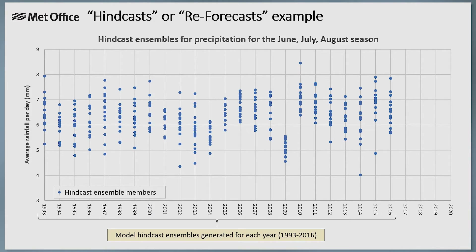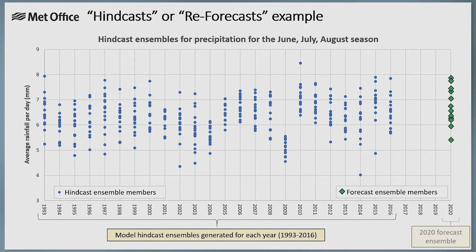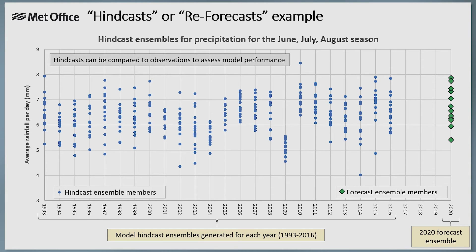To determine model climatology, we run the forecast model for a period in the past, typically 20 to 30 years. In the Met Office GloSea5 system, we cover the period 1993 to 2016. These historical forecasts are known as hindcasts or re-forecasts. Hindcast runs are produced throughout each of these past years, allowing a hindcast ensemble to be made that can match any forecast ensemble in terms of lead time and the forecast season, allowing a fair like-for-like comparison. Hindcasts are also useful for comparing with observations of the real climate to see how well the model captures climate variability from year to year.